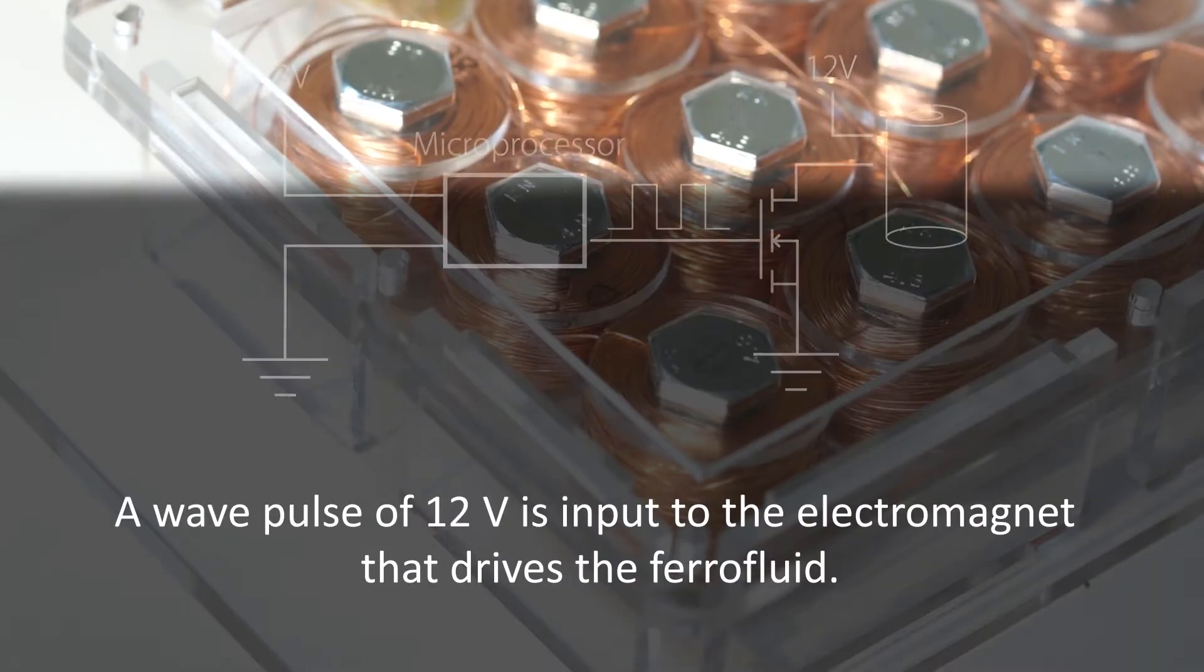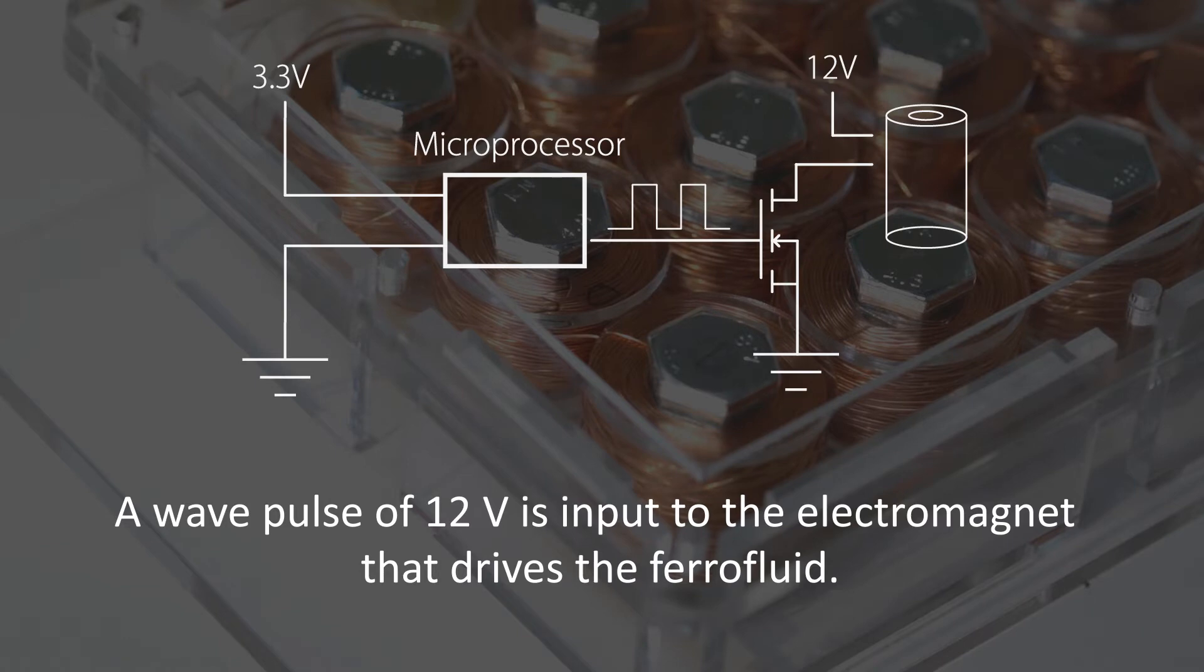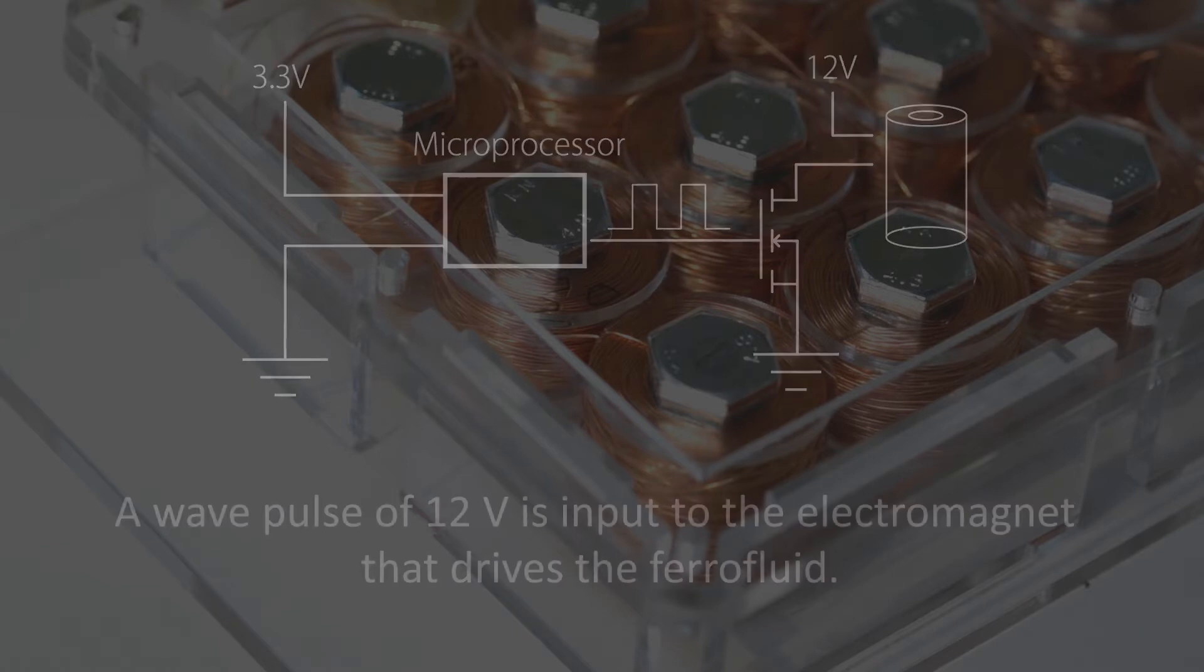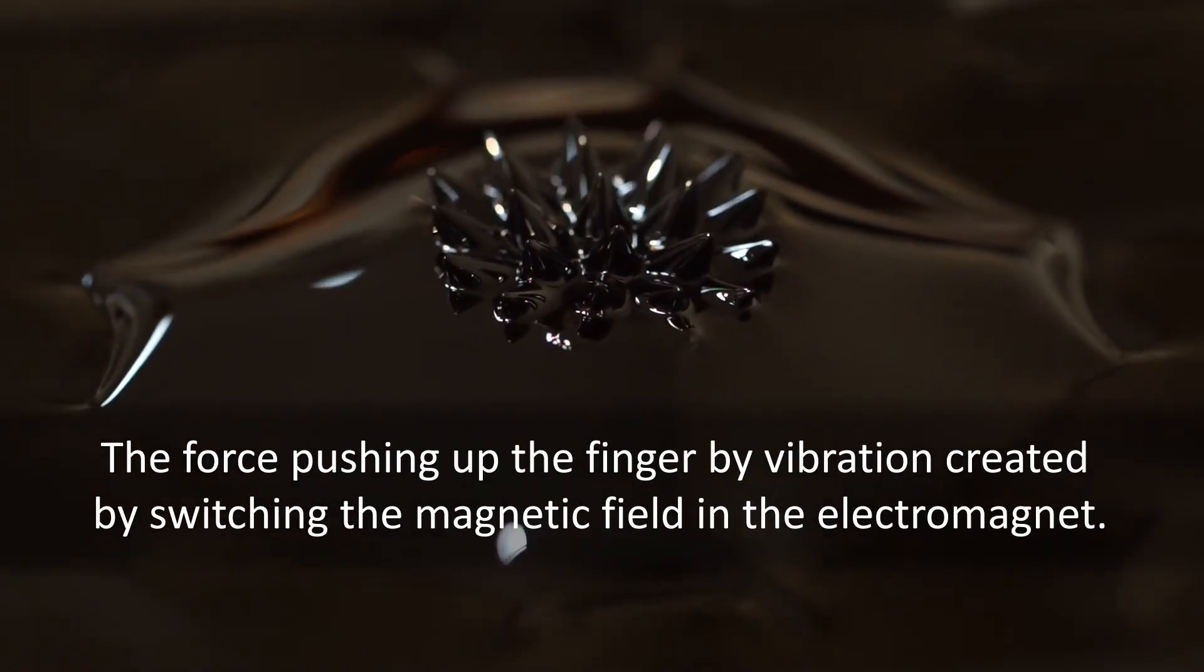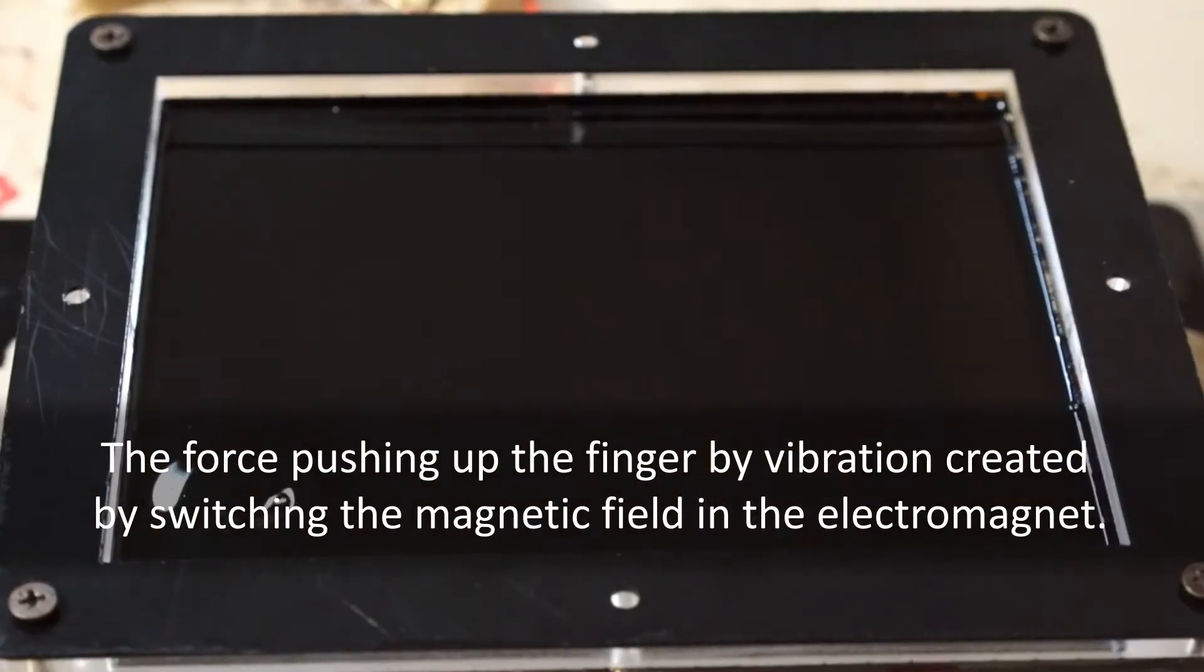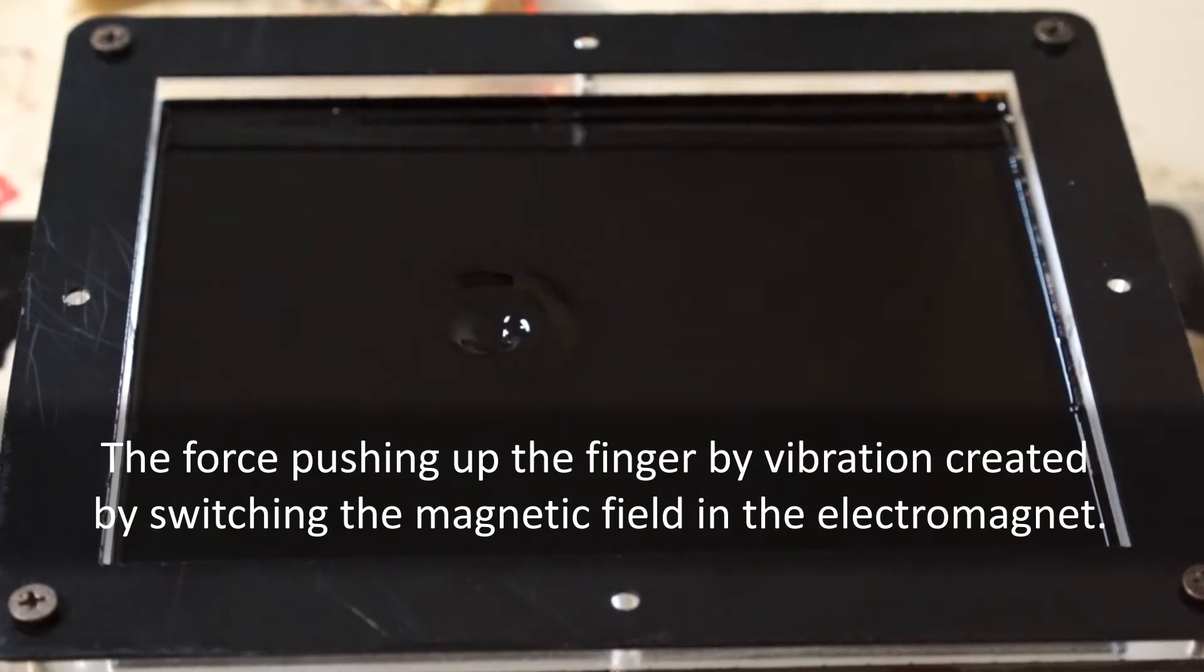The electromagnet array layer receives a wave pulse of 12 volts input to the electromagnets that drive the ferrofluid. The ferrofluid layer creates force pushing up the finger by vibration created by switching the magnetic field in the electromagnets.